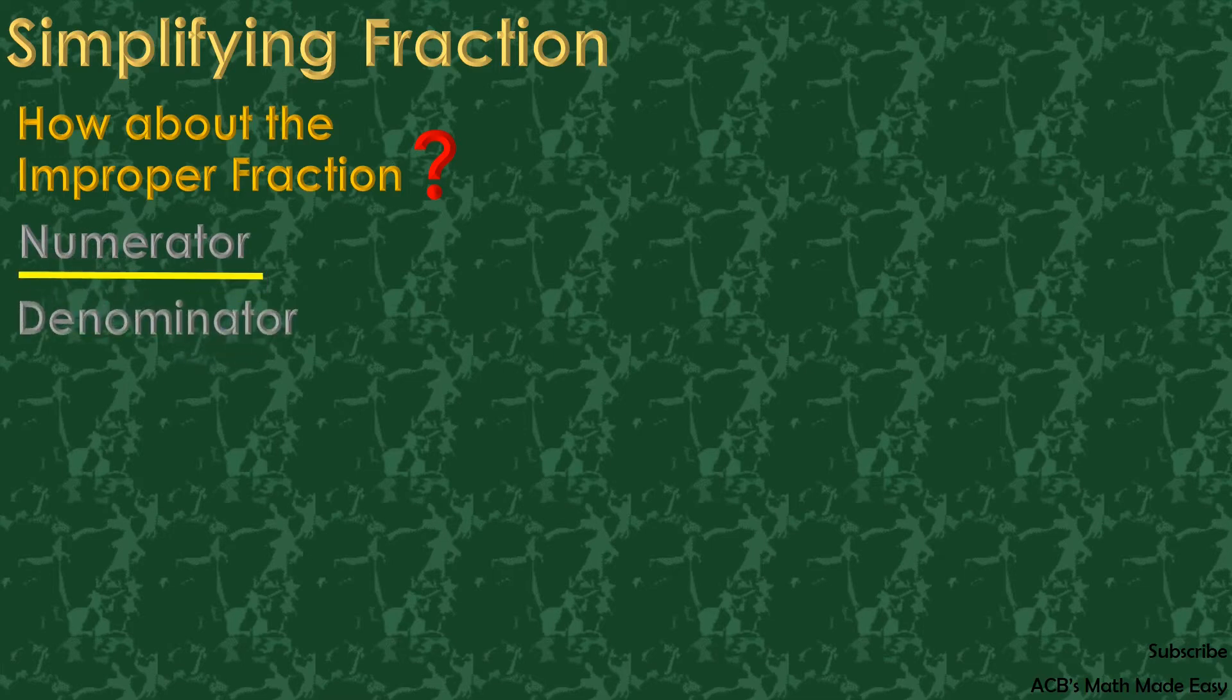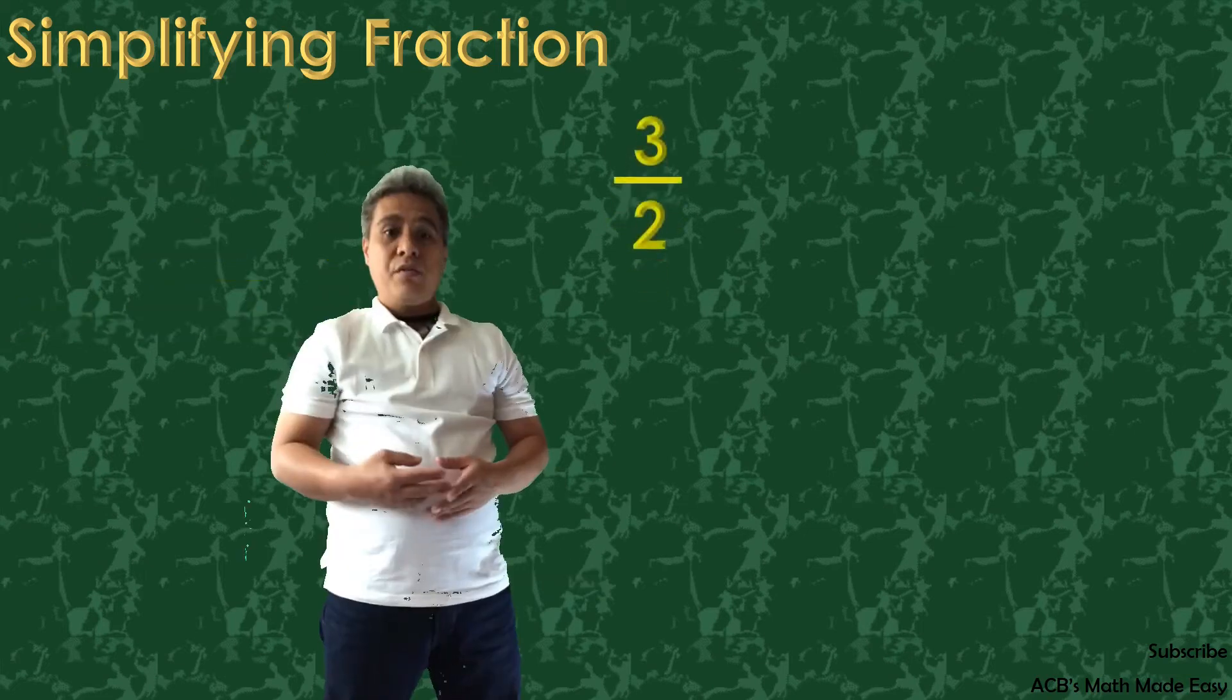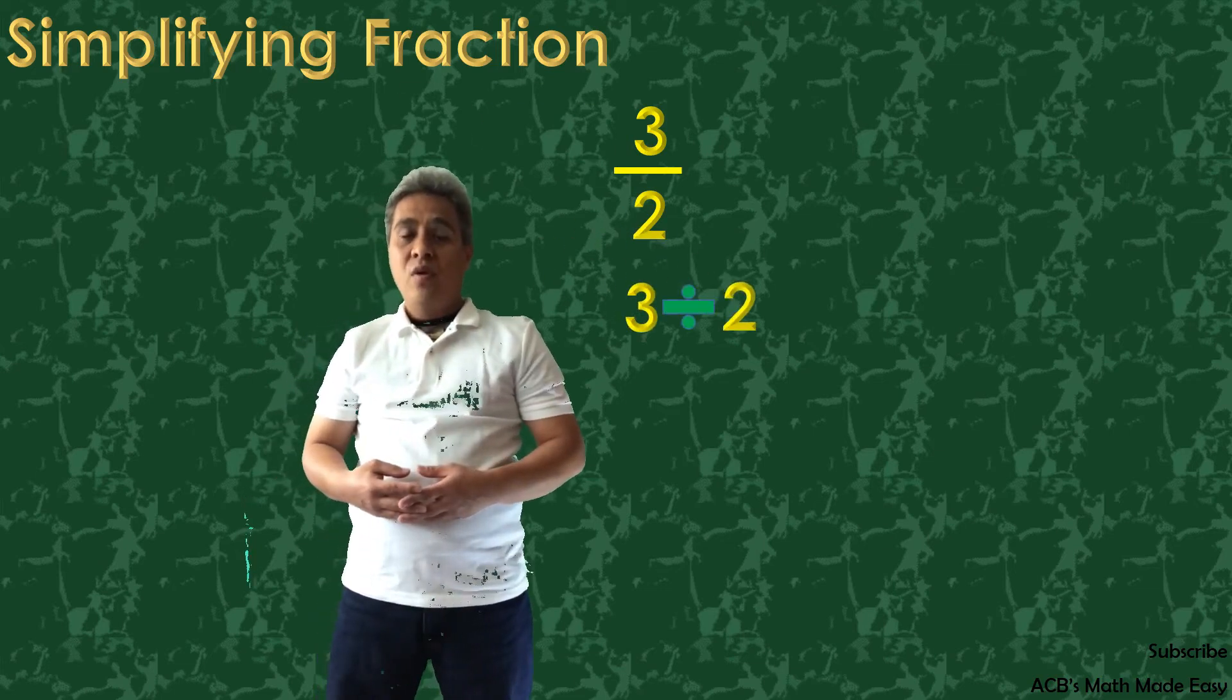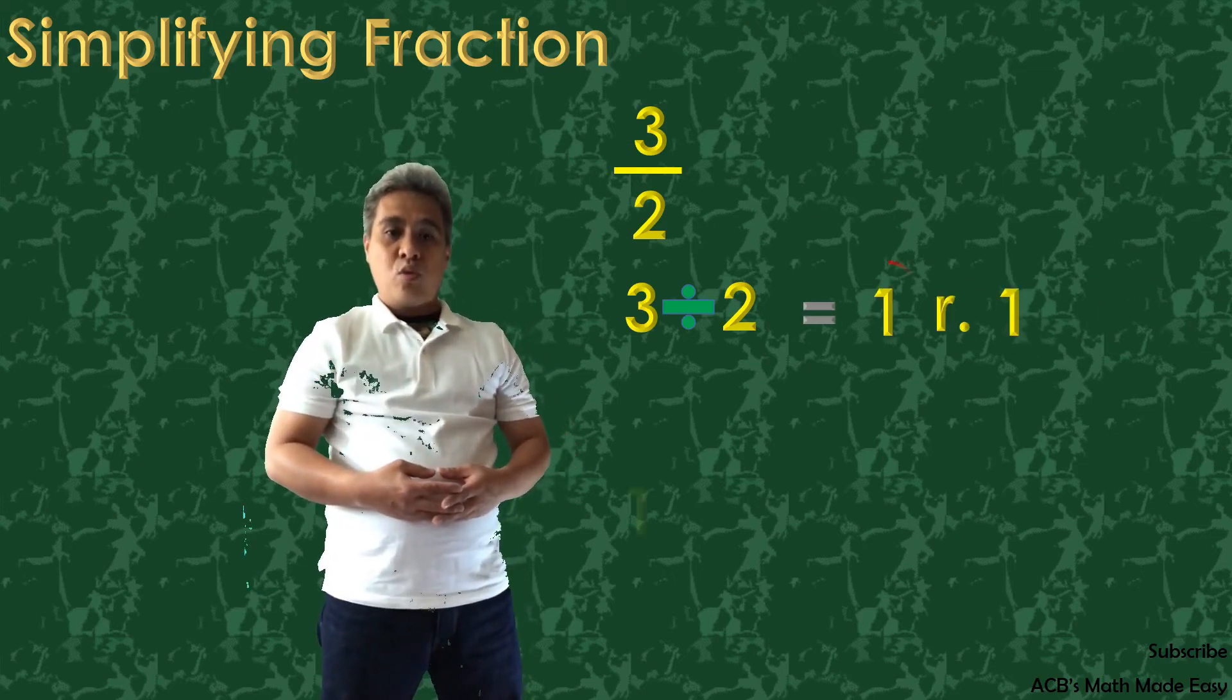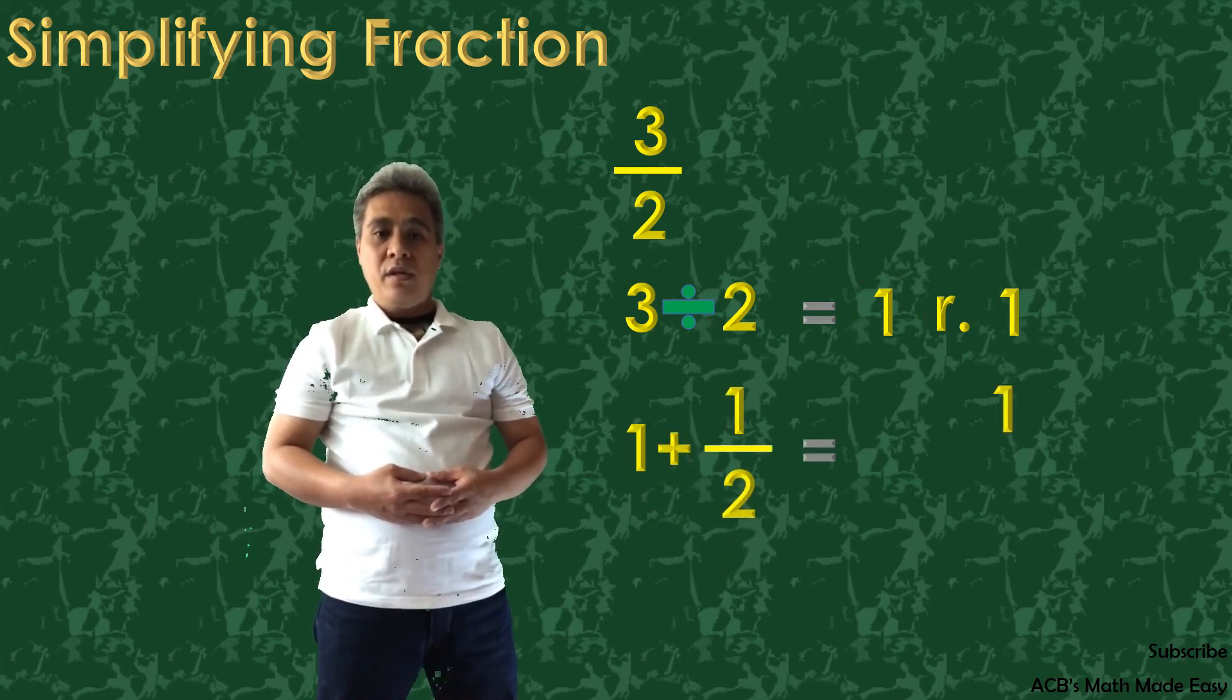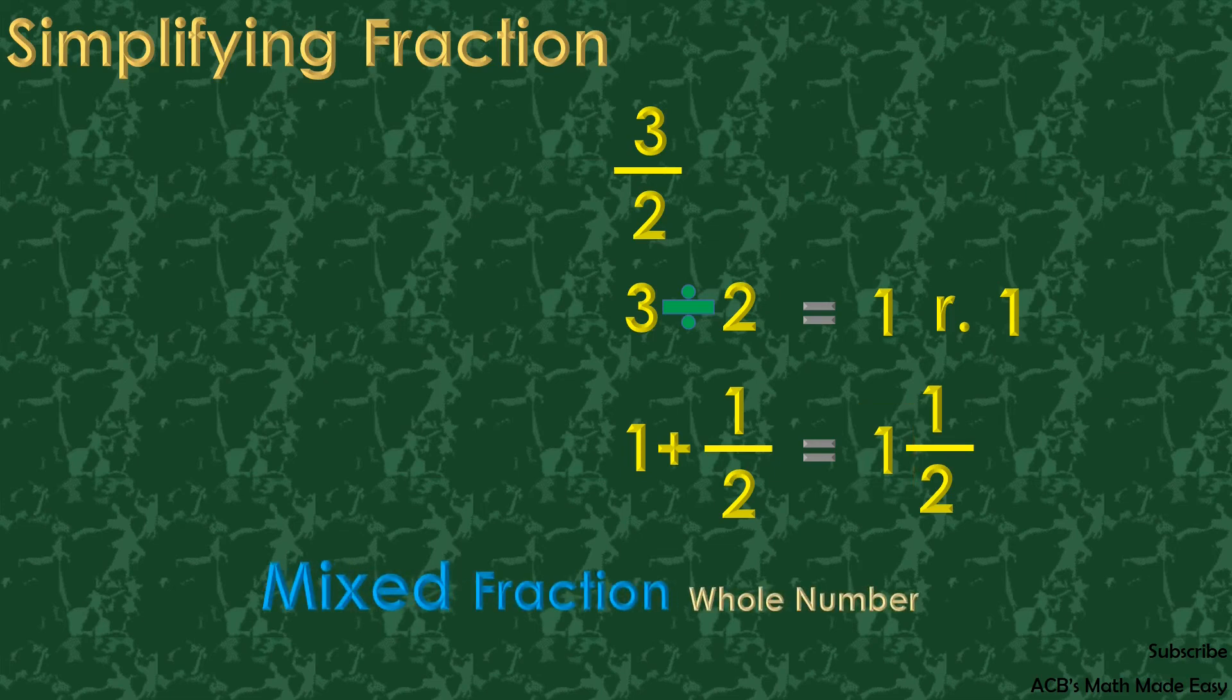Example, 3 over 2. But how are we going to simplify it? Simply divide the numerator to the denominator. 3 over 2 can be written to 3 divided by 2. And when you divide 3 to 2, you will get an answer of 1 remainder 1. You can rewrite it to 1 plus 1 over 2. This is exactly the same to 1 and 1/2. Now, this is our answer. And this fraction is called mixed fraction. It is a combination of a whole number and proper fractions.